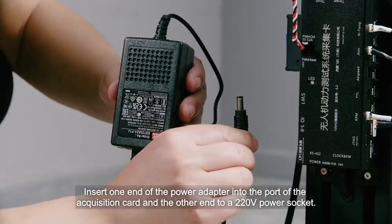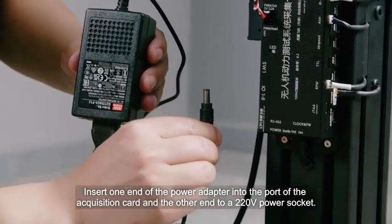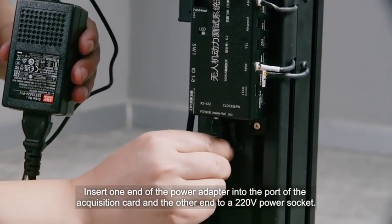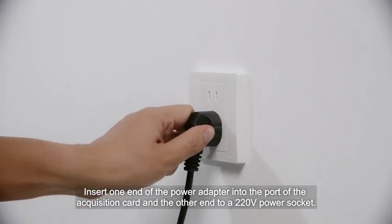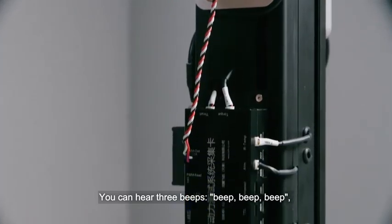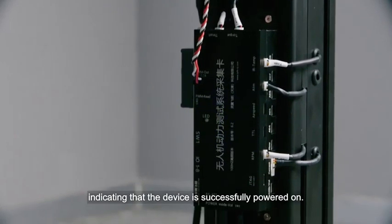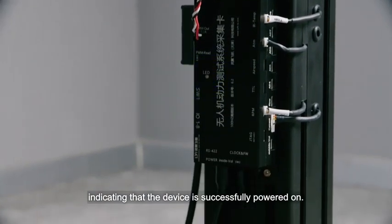Insert one end of the power adapter into the port of the acquisition card and the other end to a 220V power socket. You can hear three beeps, indicating that the device is successfully powered on.